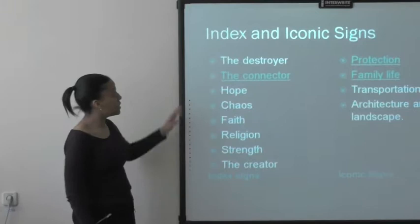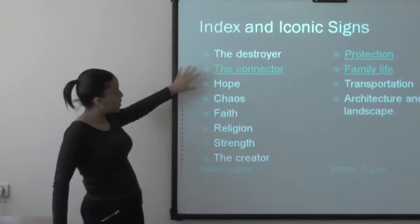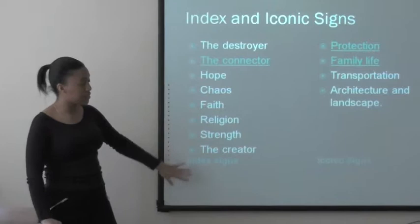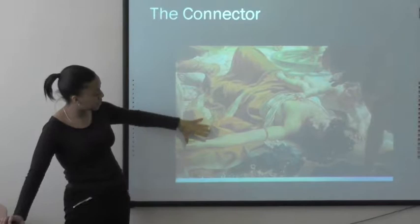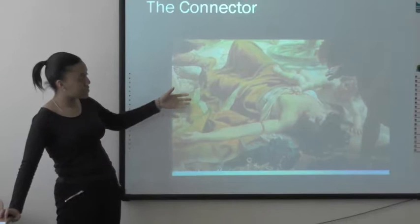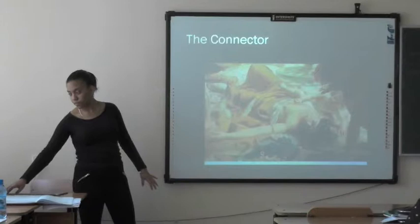Index and iconic signs. The index signs found were: the destroyer, the connector, hope, chaos, faith, religion, strength, and the creator. Focusing on the connector — here we have a lady who was the central figure. This character showed a lady who showed the connection between the two groups of people. It is all in her image: she is turned away.